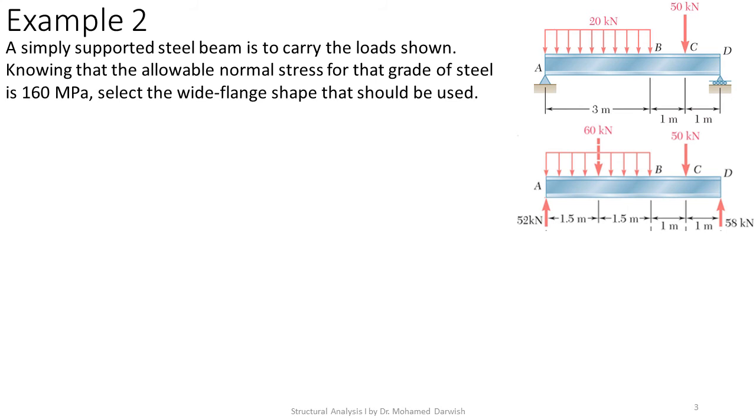First we calculate the reactions, which came to be 52 kilonewtons and 58 kilonewtons. Then we'll draw the shear force diagram. We'll start by the 52 kilonewtons. If we take a section at B, we'll see 52 minus 20 times 3, so 52 minus 20 times 3, this is negative 8.